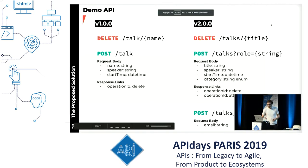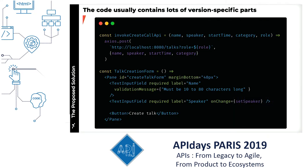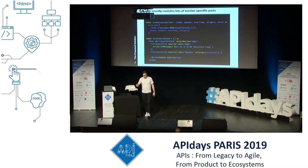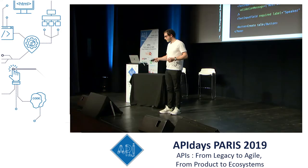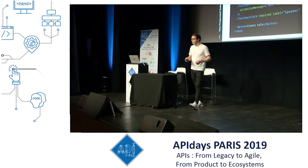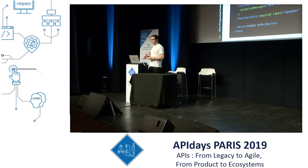Basically, I wrote this kind of code. The upper section is the invocation of the HTTP call, and the other section shows that I hardcoded the form to get input from the user and then invoke the API with the correct information. In this small example, I have one field for the name and another for the speaker — which explains why it breaks when I invoke the API.